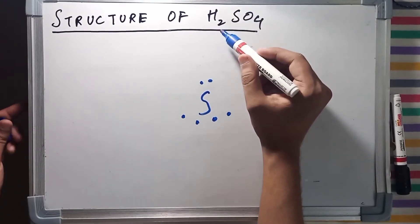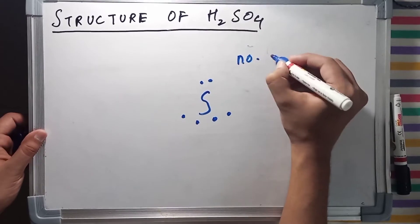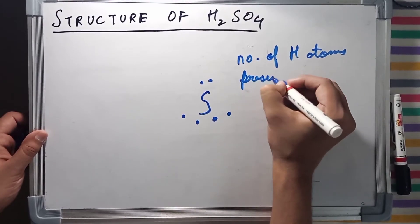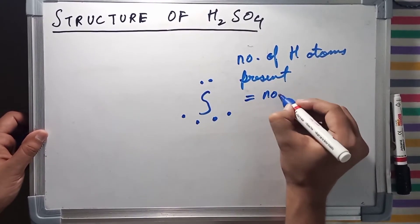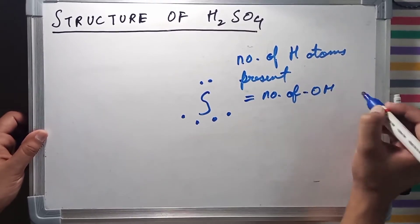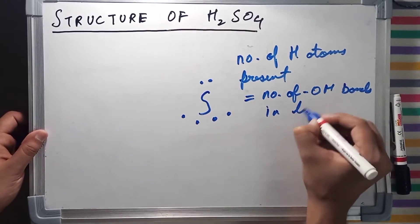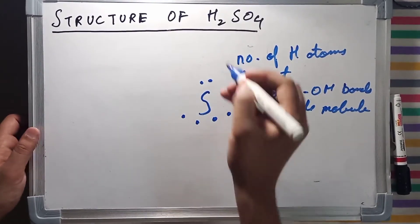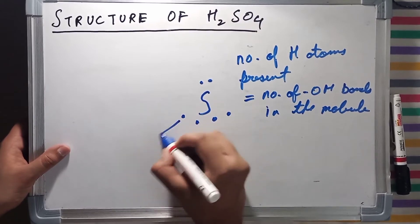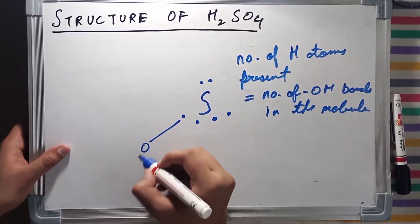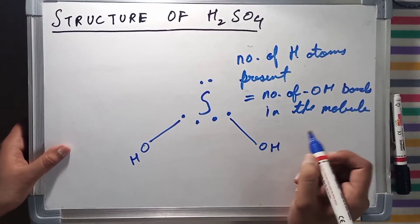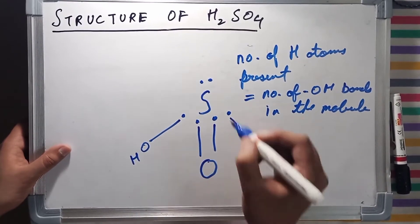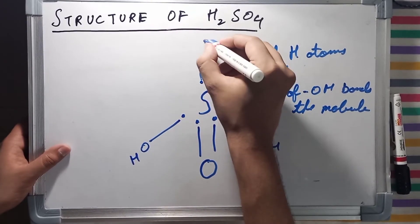It has 2 hydrogens, which means the number of H atoms present is equal to the number of OH bonds in the molecule. Now we are going to draw the OH bonds first. So the first OH bond, and the second OH. We are left with 2 oxygen atoms which we are going to draw now — oxygen, oxygen.